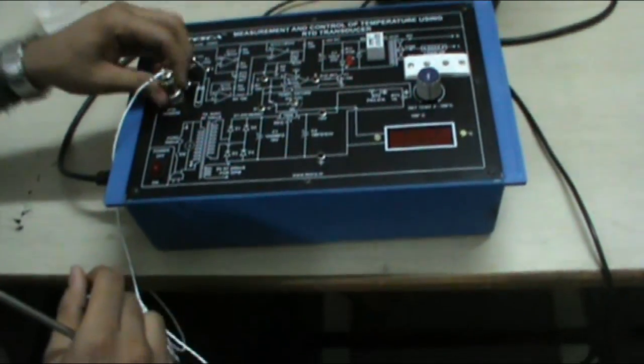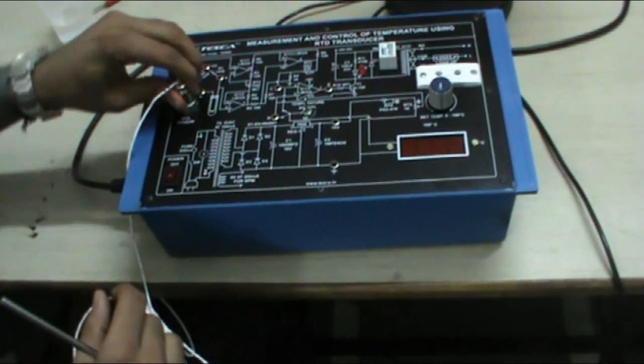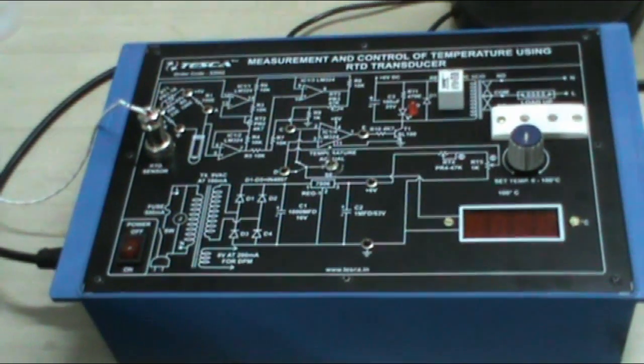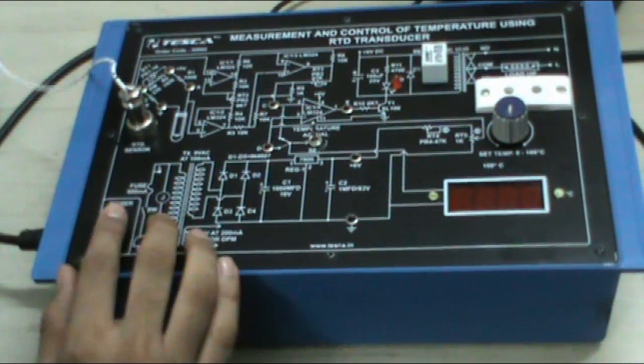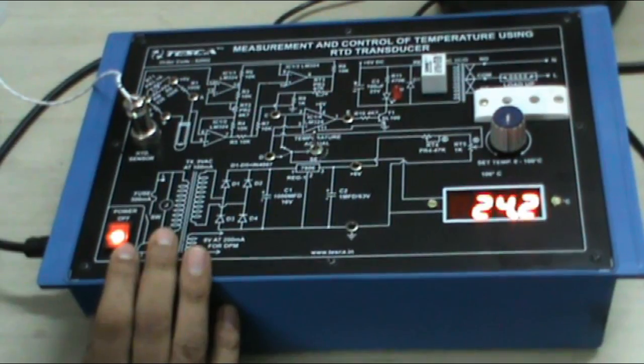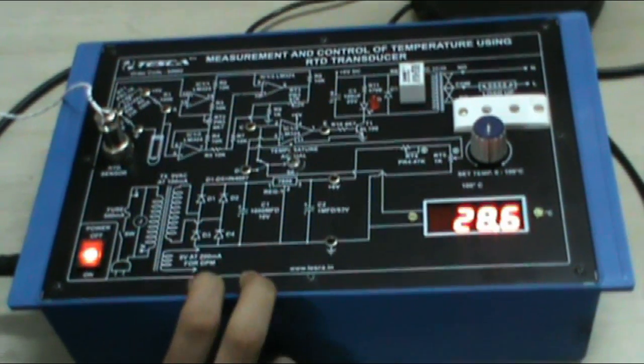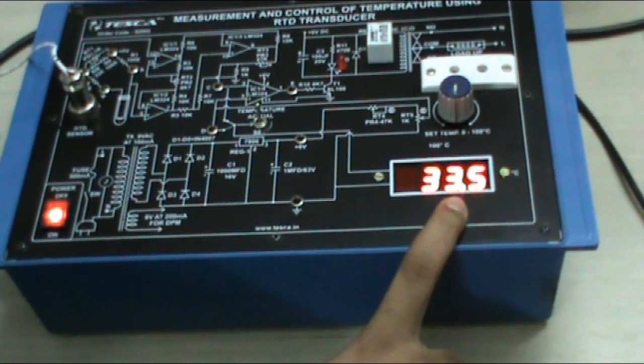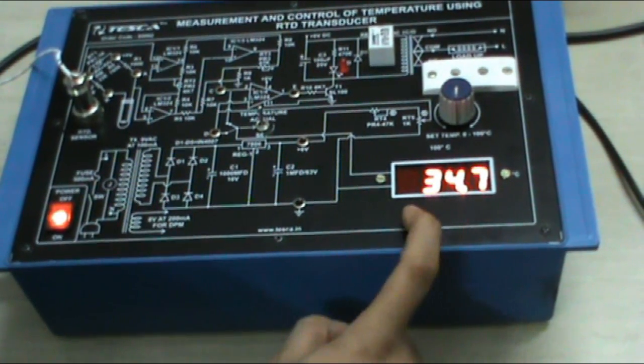Let's connect this transducer to this socket. As you can see, now as we switch on our system, it will display the room temperature. As you can see in this LCD, the room temperature is approximately 34 degrees.